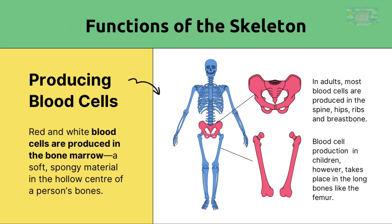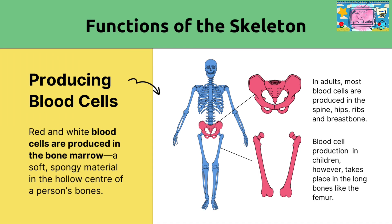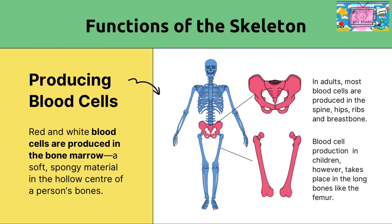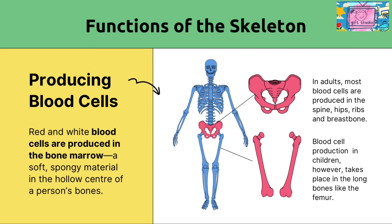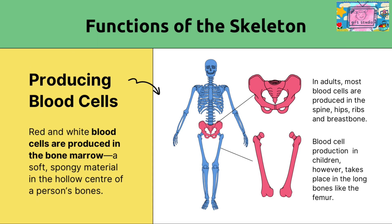Red and white blood cells are produced in the bone marrow — a soft, spongy material found in the hollow center of a person's bones. In adults, most blood cells are produced in the spine, hips, ribs, and breastbone. Blood cell production in children, however, takes place in the long bones like the femur.